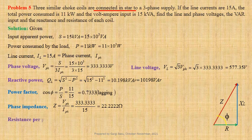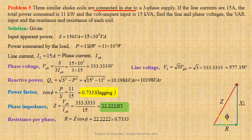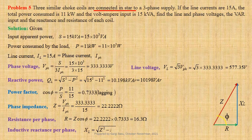From impedance triangle, resistance per phase R equals Z into cos phi; using values 22.2222 into 0.7333 equals 16.3 ohm. Inductive reactance per phase XL equals root over Z squared minus R squared; using values root over 22.2222 squared minus 16.3 squared equals 15.1 ohm.